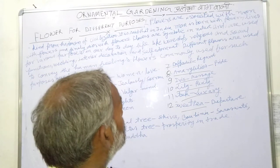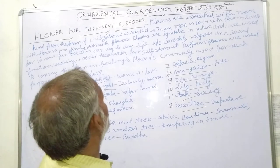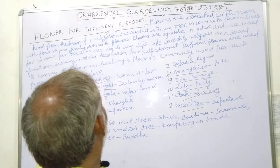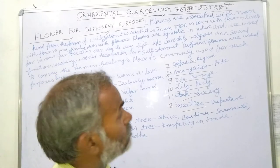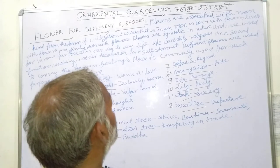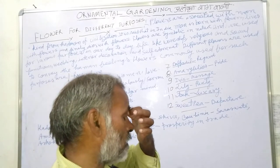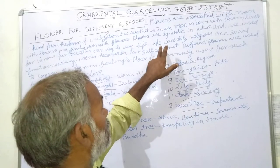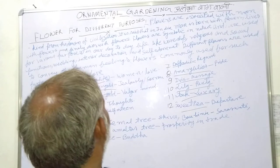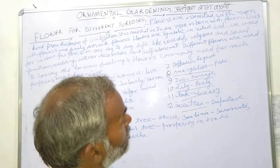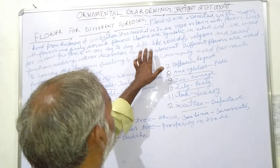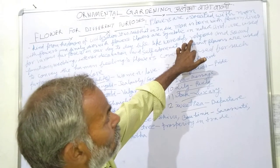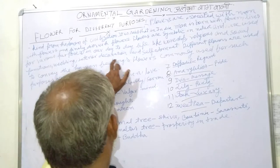Hello friends, today I am going to teach you about flowers for different purposes. The flowers are associated with mankind from the dawn of civilization. It is said that in India, the flowers are symbolic of nature and are used for various purposes in our day-to-day life.